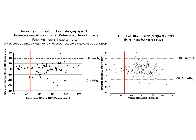Studies by Fisher at Hopkins and Rich at Northwestern make echo look horrible — on a Bland-Altman plot, you effectively have plus or minus 40 mmHg. But if you look more closely, drawing red lines at 45 mmHg, the fit is quite tight when distinguishing normal from abnormal. The scatter comes mainly at 90 mmHg and above. We don't really care whether it's 90, 70, or 110 — in the PH literature there are no classifications of mild, moderate, or severe. As Potter Stewart famously said about pornography: it's hard to define, but you know it when you see it. You know when someone has severe pulmonary hypertension.